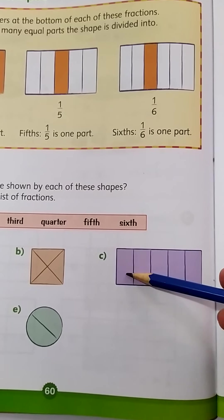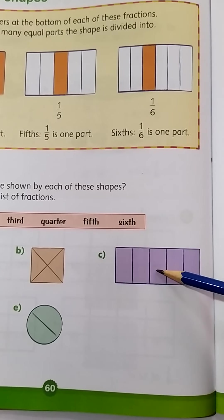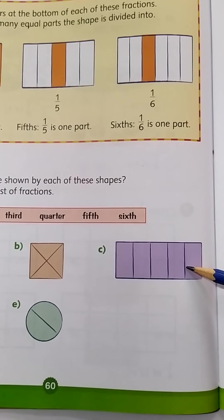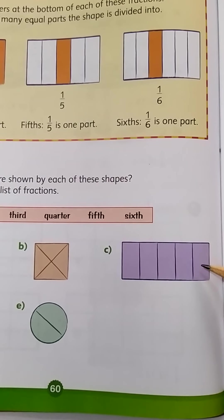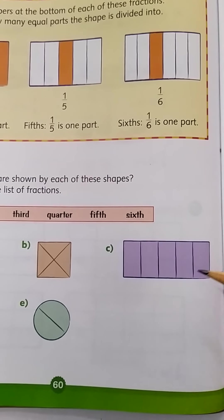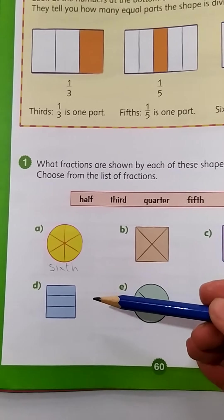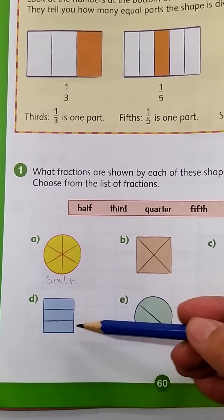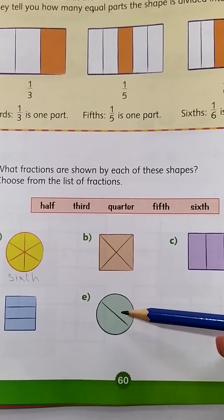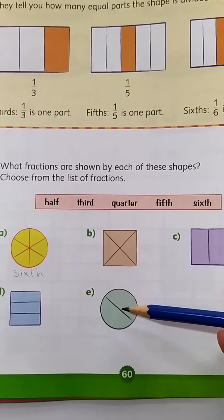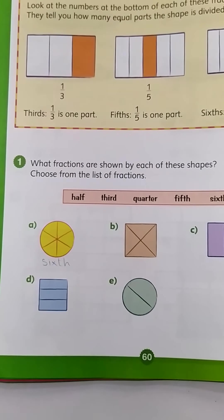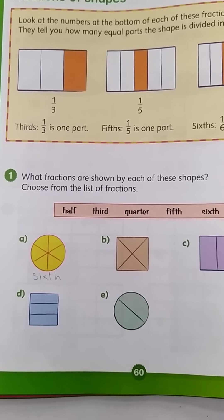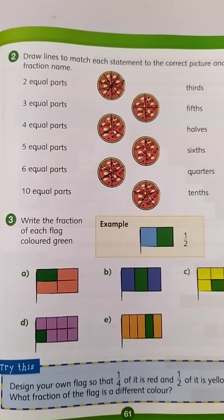How many parts? One, two, three, four, and five — it is called fifths. So you will write it down. Then three parts: third. Two parts: half. Okay, it's quite easy, you will learn it quickly.